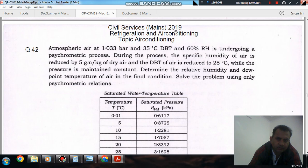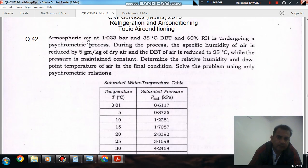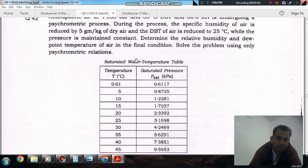We are talking about air conditioning problem number 42 from an exam in May 2019. Atmospheric air at 1.0133 bar and 35 dB Celsius DBT and 60% relative humidity is undergoing a psychrometric process. During the process, the specific humidity of air is reduced by 5 g per kg of dry air and the DBT of air is reduced to 25 degrees Celsius while the pressure is maintained constant. Determine the relative humidity and dew point temperature of air in the final condition. Solve the problem using only psychrometric relations.